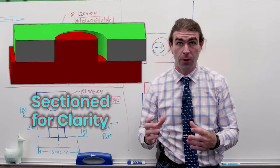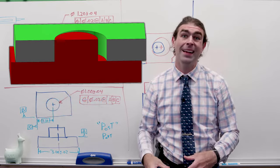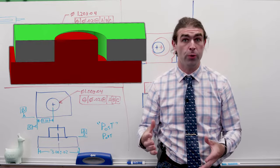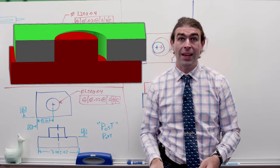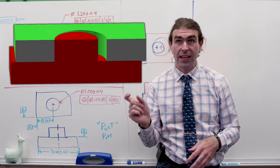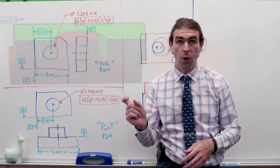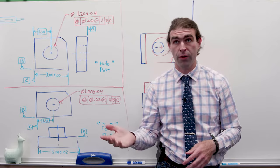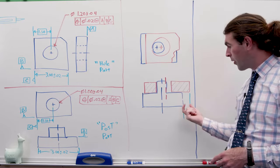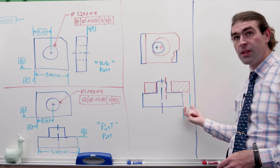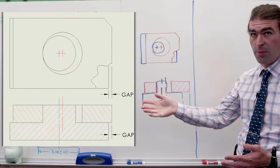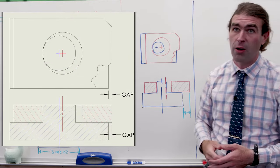Essentially, you have a part with a hole in it, and then you have a part with a post. What we want to know is how far the stick-out is of the part with a hole in it over the part with the post. I'll go ahead and put the CAD image up on the board as well.